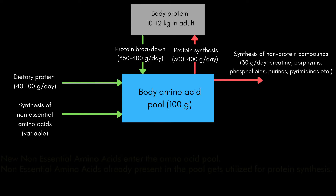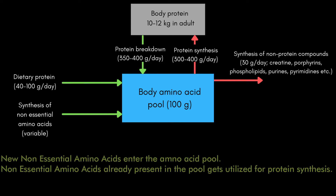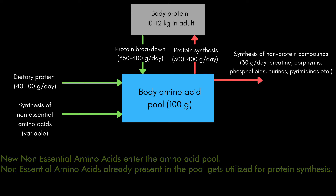The next incoming source for the amino acid pool is the synthesis of non-essential amino acids. As discussed in the previous video, essential amino acids must be consumed through diet because our body cannot produce them, but non-essential amino acids can be produced by the body and added to the pool. When protein synthesis is occurring and non-essential amino acids are required, the body supplies them from the pool to build complete proteins consisting of all 20 amino acids.